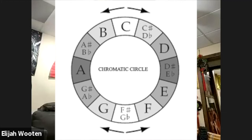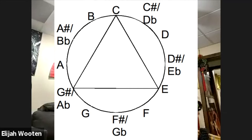The triangle — if you have a clock and you give every number on the clock a chromatic note: 12 o'clock is C, 1 o'clock is C#, 2 o'clock is D, 3 o'clock is D#, 4 o'clock is E. So C to E is a major third. Then you go to 8 o'clock — that's G#. C, E, G# — that makes a triangle.